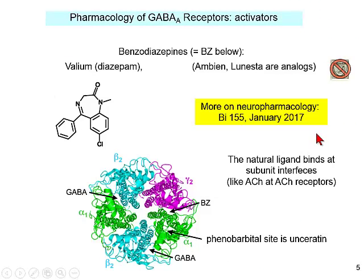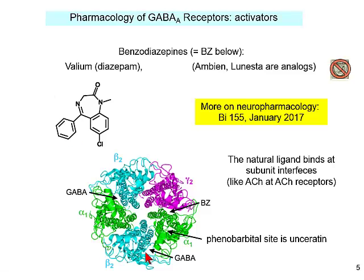There is a very rich and useful pharmacology of GABA-A receptors. First, the activators: GABA is itself an agonist — the natural agonist of GABA-A receptors. Just like acetylcholine at nicotinic receptors, GABA actually binds at the interface between two subunits. In addition, there is a very interesting large class of molecules that binds at the interface between other subunits.